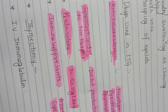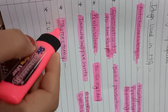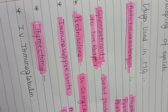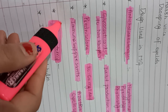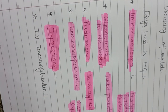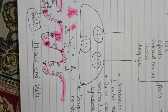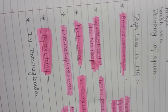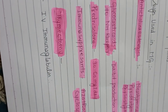The next treatment option is thymectomy. Thymectomy is related to the thymus gland — it means the surgical removal of the thymus gland. The thymus gland produces abnormal antibodies, so we surgically remove it so that there is inhibition in the production of antibodies. When antibody production stops, they cannot bind to nicotinic receptors and the chances of myasthenia gravis are greatly reduced.